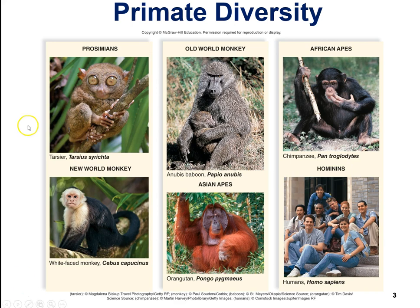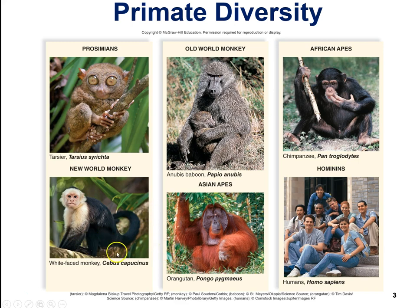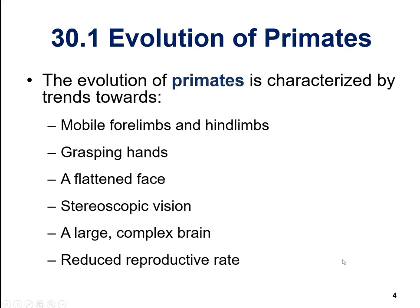If we talk about primates in general, we're talking about the order Primates, to which humans are a member. You can see the different groups here — prosimians, tarsiers, old-world monkeys, baboons, apes, new world monkeys, Asian apes like the orangutan — and then hominins, which is where humans fit. We'll see a phylogenetic tree shortly.